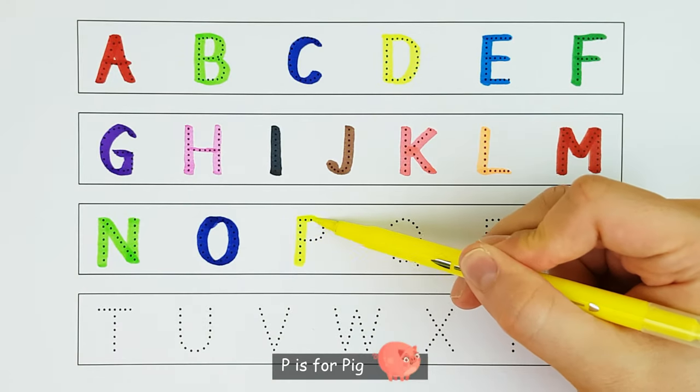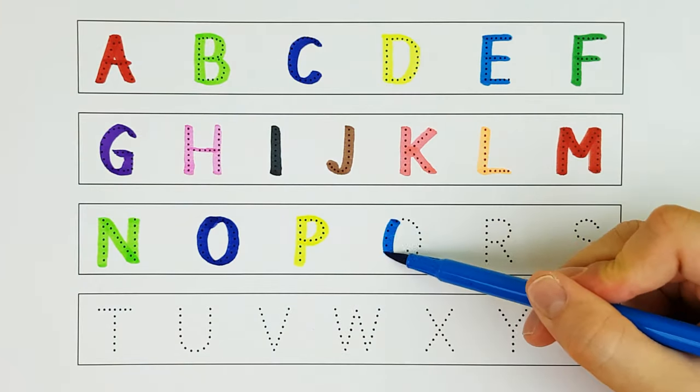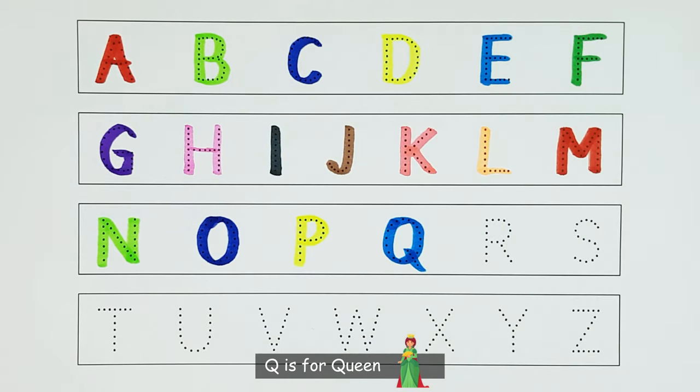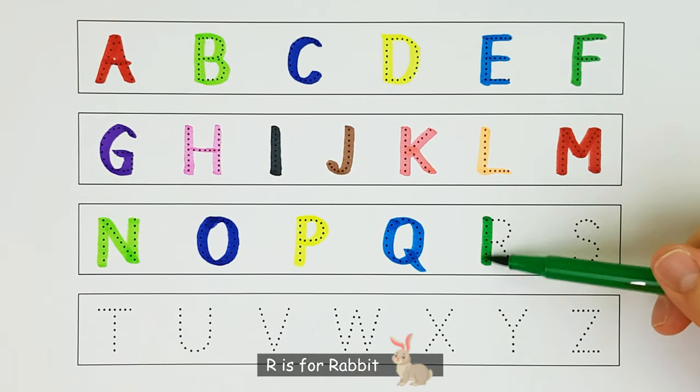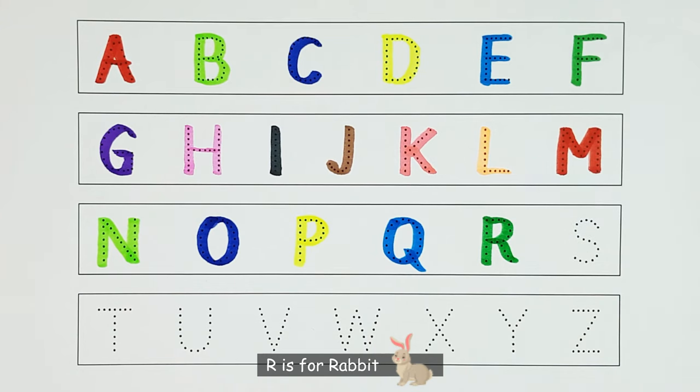P. P is for Pig. P. Q. Q is for Queen. Q. R. R is for Rabbit. R.